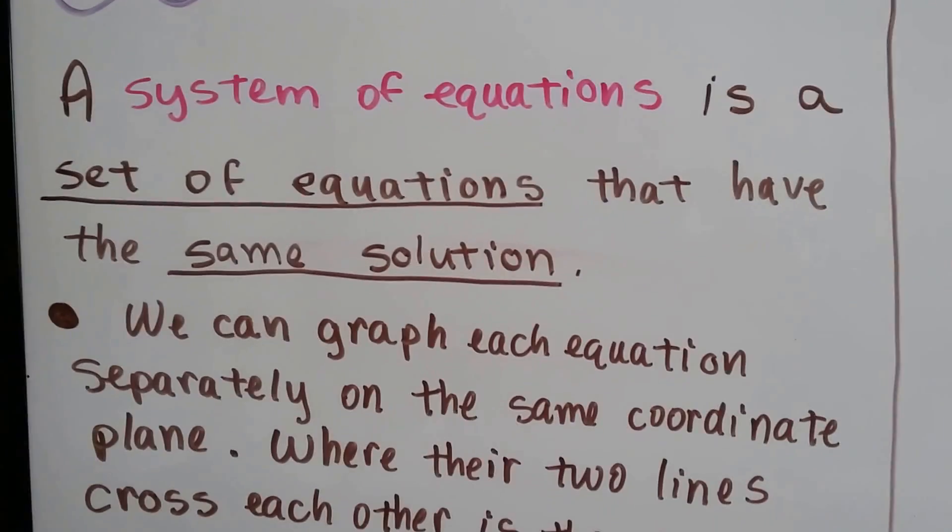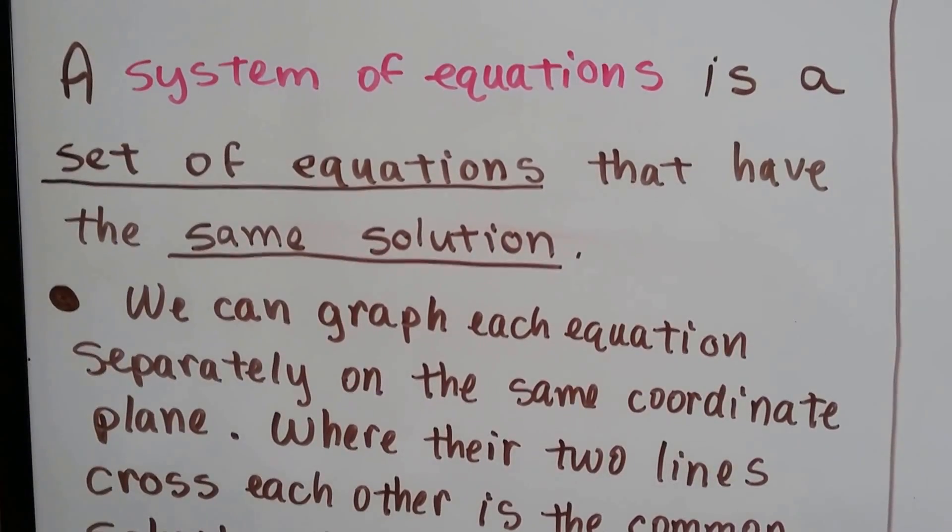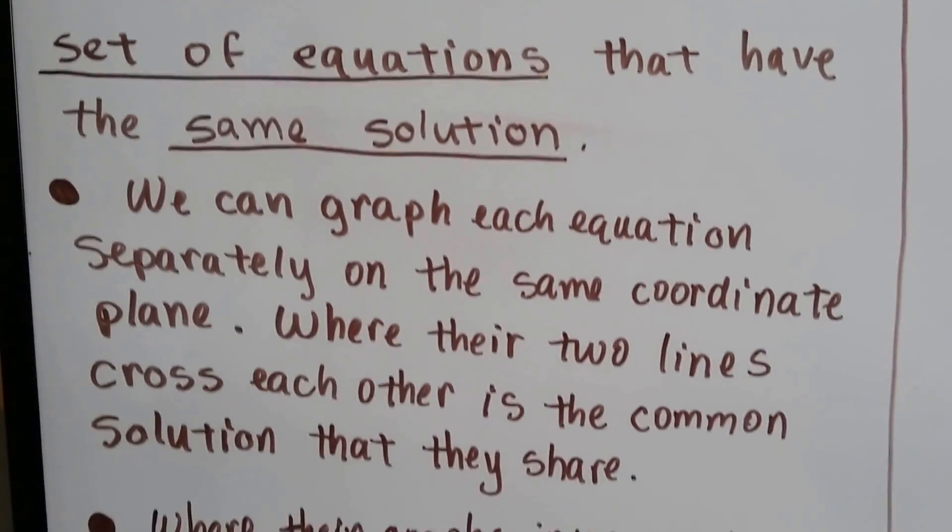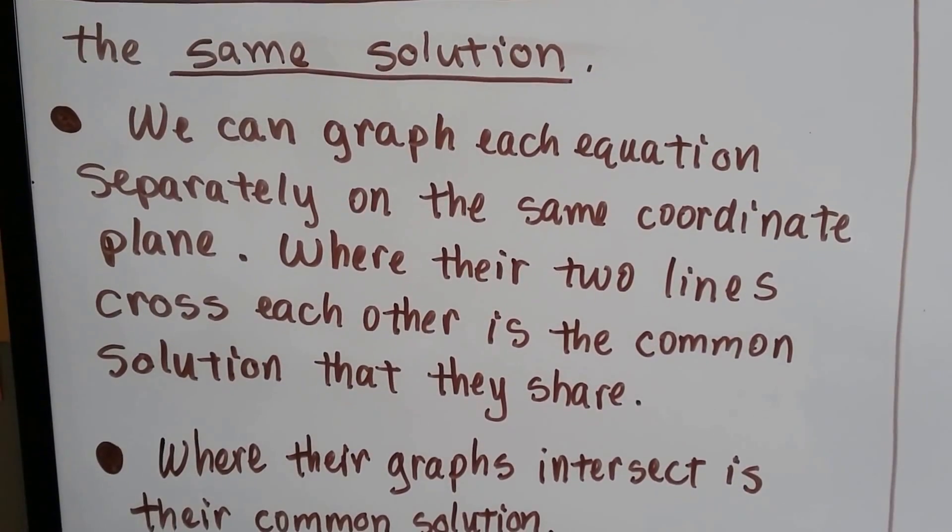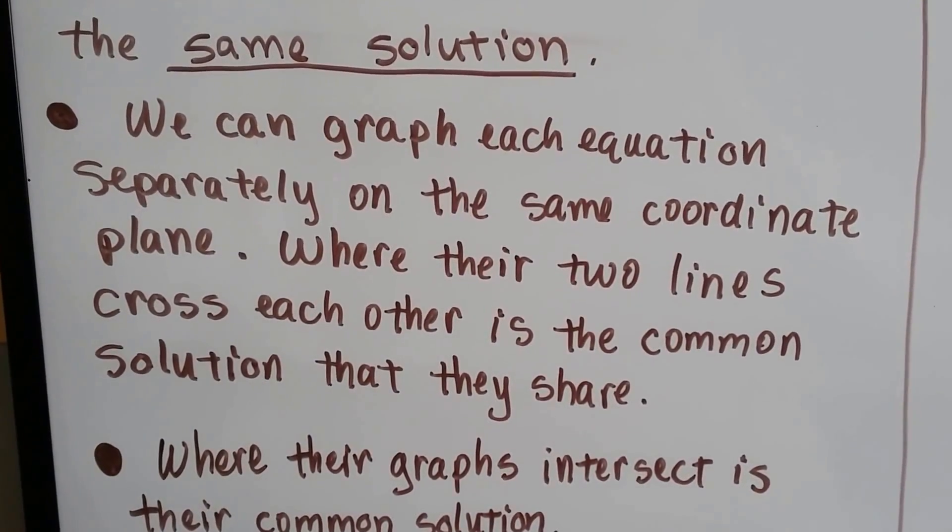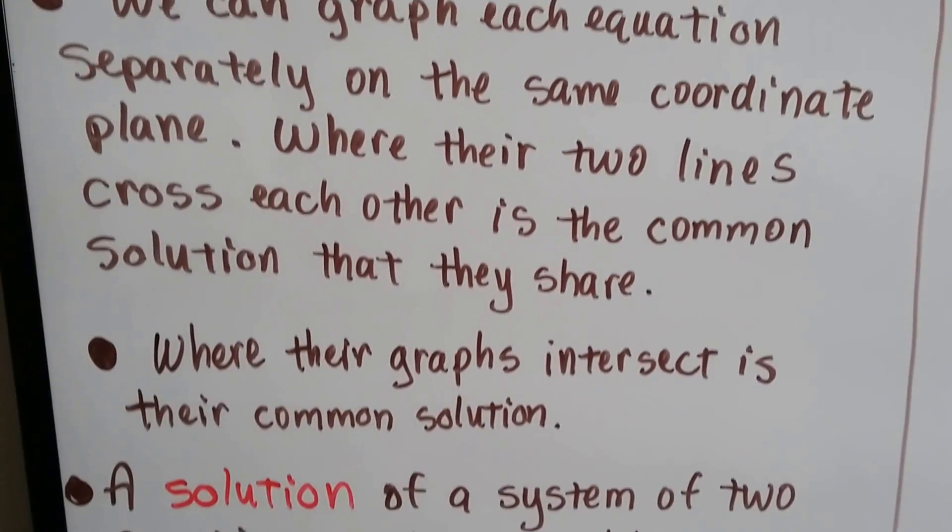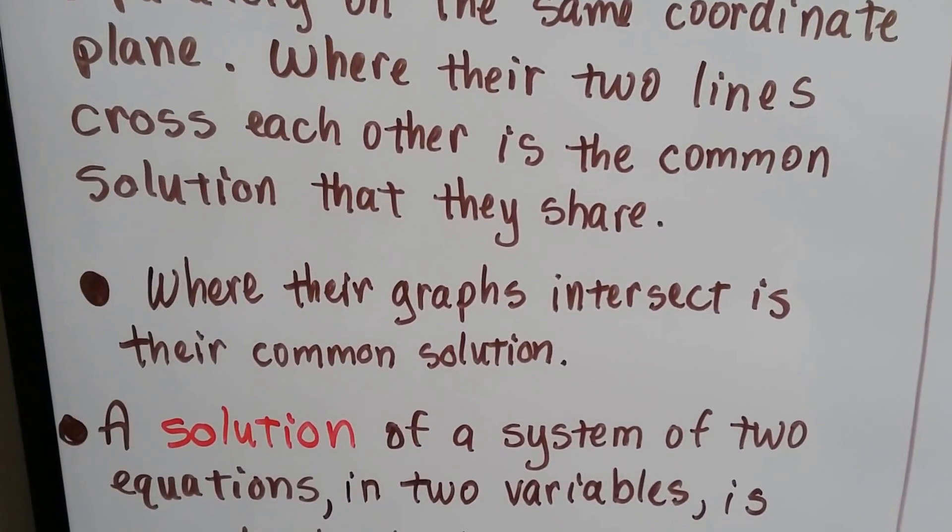A system of equations is a set of equations that have the same solution. We can graph each equation separately on the same coordinate plane, and where their two lines cross each other is the common solution they share. So where their graphs intersect is the common solution.